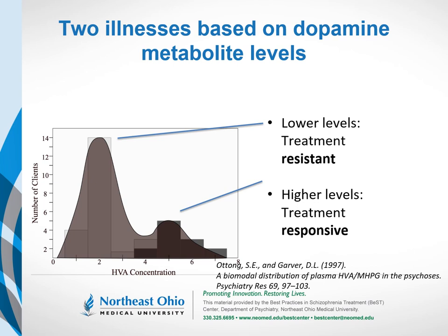Homovanillic acid, or HVA, is a metabolite of dopamine, and under relatively stringent measurement conditions, plasma or cerebrospinal fluid HVA levels can be valid biomarkers of central dopamine turnover. Atong and Garver showed that HVA levels have a bimodal distribution in the plasma of people with schizophrenia, defining two subtypes. The subtype with high HVA levels — inferred to have high dopamine turnover — turned out to be responders to non-clozapine antipsychotic drugs, whereas the population with normal HVA levels turned out not to be responsive to antipsychotic medications.